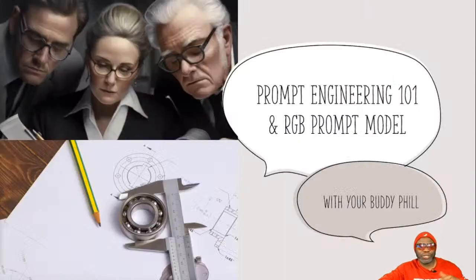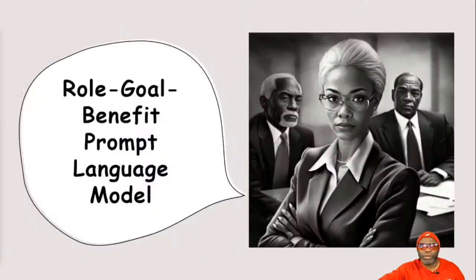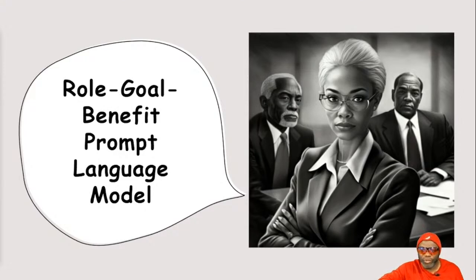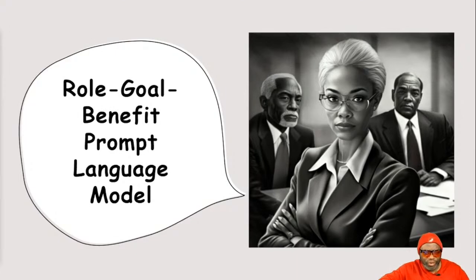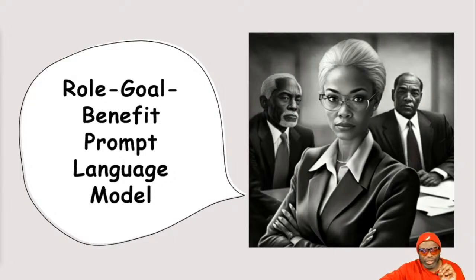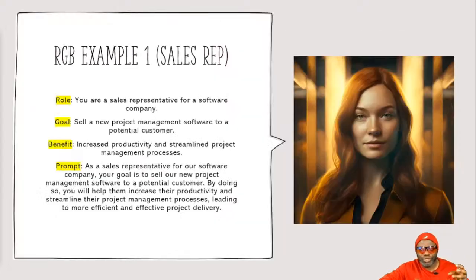In the very beginning I said I was going to teach you a new model. The model is the Role-Goal-Benefit prompt language model, coined by yours truly. Because I come from the world of agile, I take things from that world and use them. The Role-Goal-Benefit language model is really from the world of user stories - it's been around for a long time, and all I'm doing is taking that structure of a user story and crafting it into my prompt.